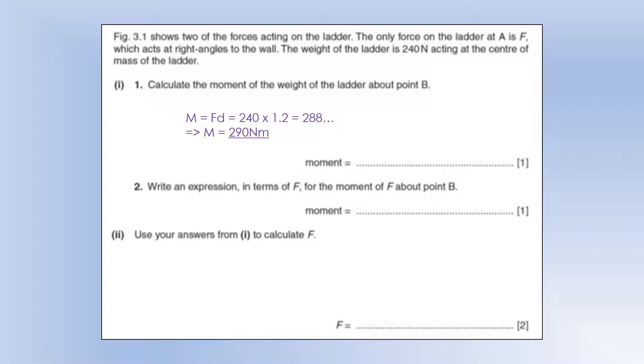Now it asks us to write an expression in terms of F for the moment of F about point B. Well, F acts horizontally, so we need a vertical distance. And the distance, as you can see in the diagram, is 3.2, so it's going to be 3.2F.